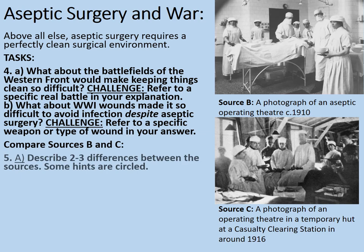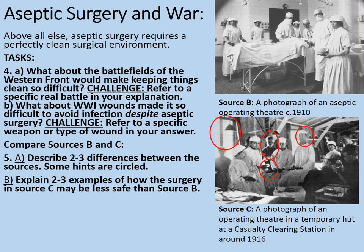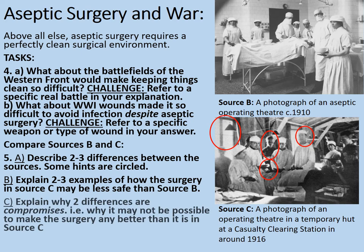Now let's have a look at another comparison between Sources B and C. Task 5A: describe two to three differences between the sources. Then explain two to three examples of how the surgery in Source C may be less safe than in Source B. Then explain why two of the differences in Source C are actually compromises — where they're making the best of a bad situation and why it might not be possible to make the surgery any better than it is in Source C.